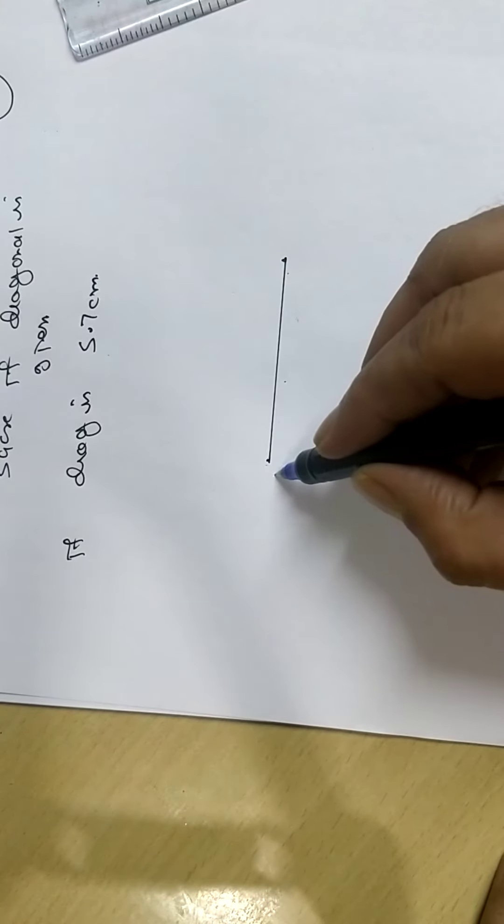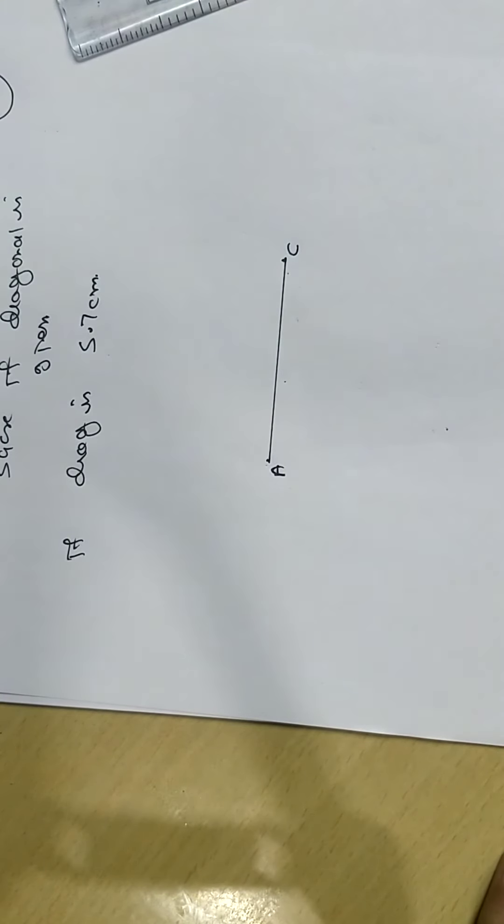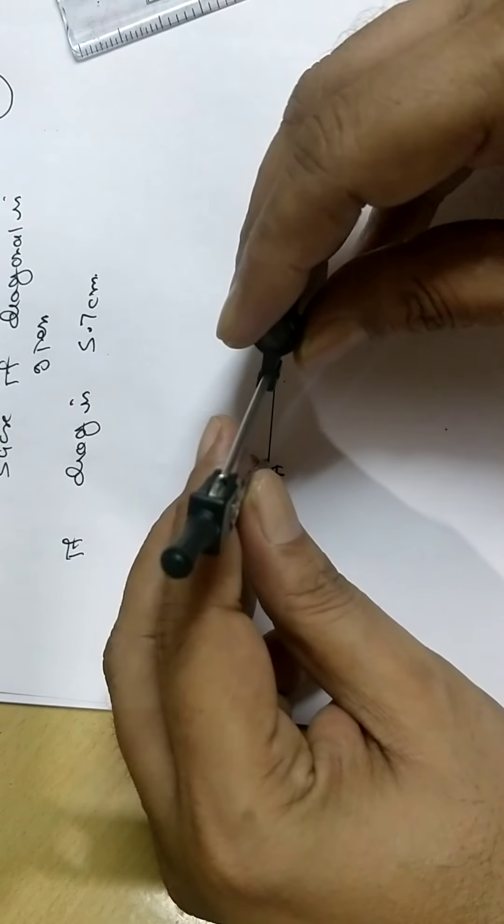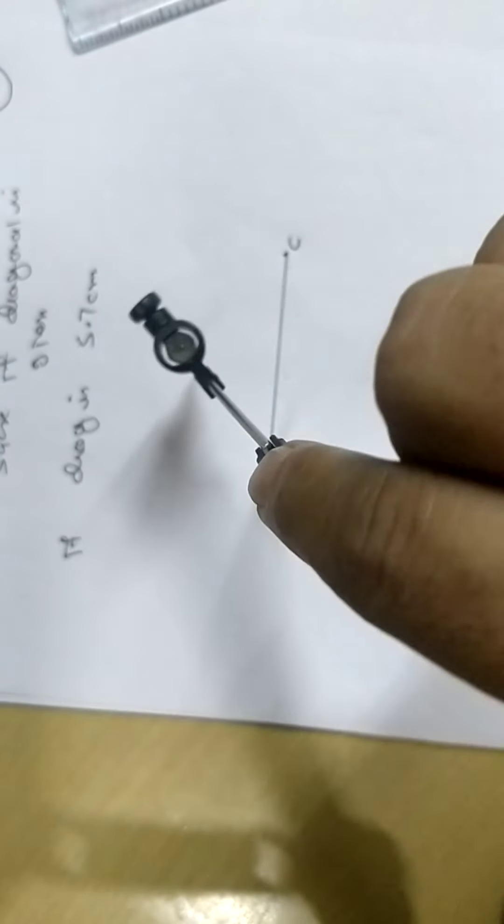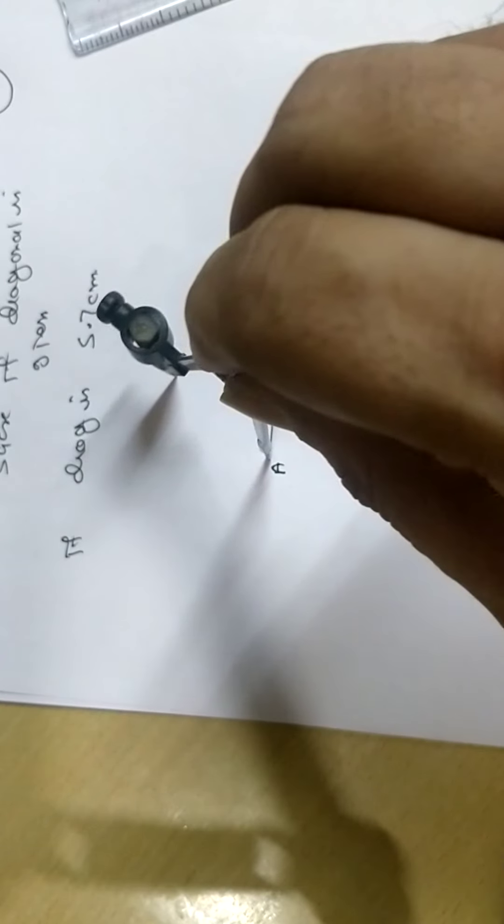Remember the property, diagonals bisect each other at right angles. So draw perpendicular bisector of AC by taking more than half, up and down.